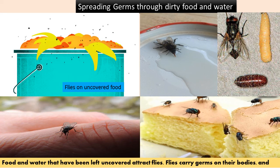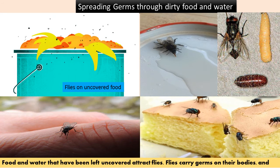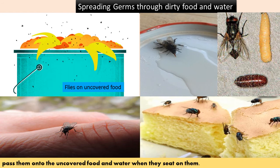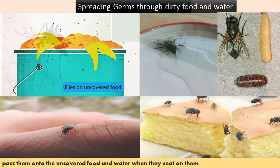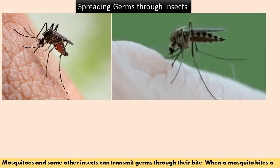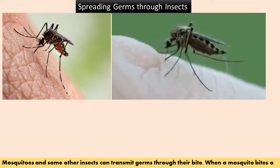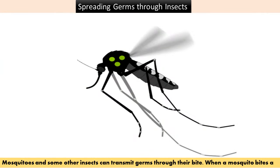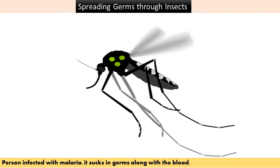Food and water that have been left uncovered attract flies. Flies carry germs on their bodies and pass them on to uncovered food and water when they land on them. Mosquitoes and some other insects can also transmit germs through their bite. When a mosquito bites a person infected with malaria, it sucks in germs along with the blood.